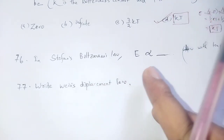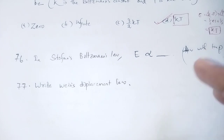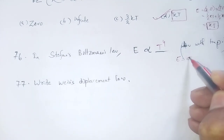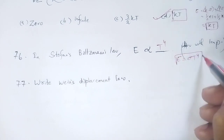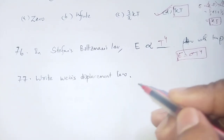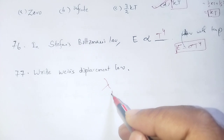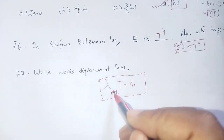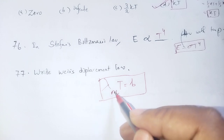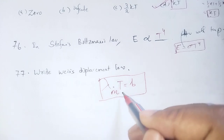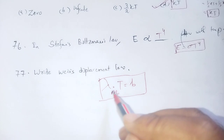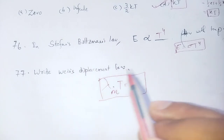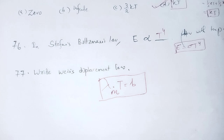Question 74: In Stefan-Boltzmann law, E is directly proportional to temperature to the power fourth — E ∝ T^4. Question 75: Wien's displacement law states that λ_max × T = b, where λ_max is the maximum wavelength of radiation corresponding to maximum intensity and T is the temperature. This is Wien's displacement law.